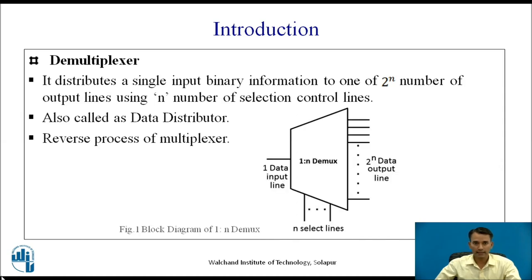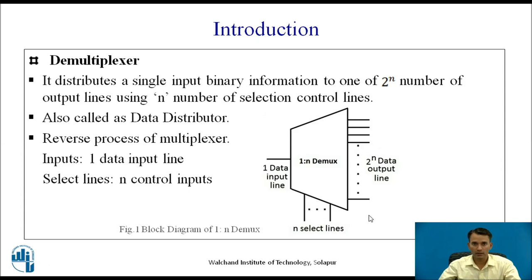A demultiplexer has exactly the reverse process of a multiplexer. This is the block diagram of a 1-to-n demultiplexer, where there is a single data input line and 2^n data output lines, and n number of select lines which select one of the outputs connected to the input line, distributing the data among all of the outputs.